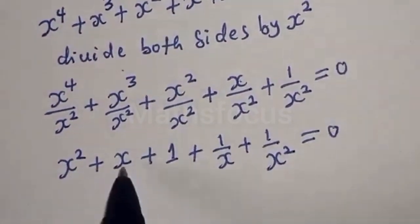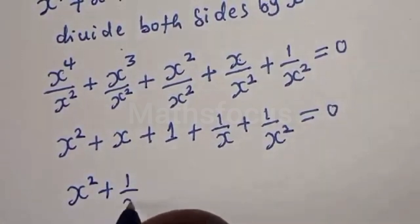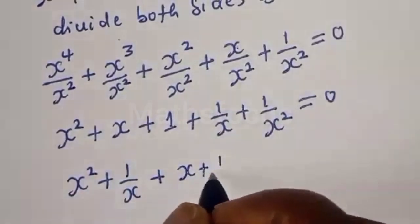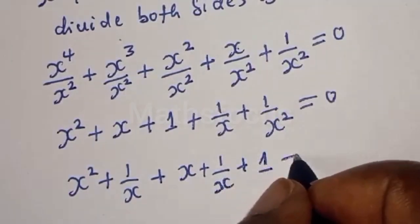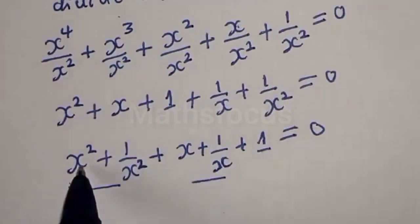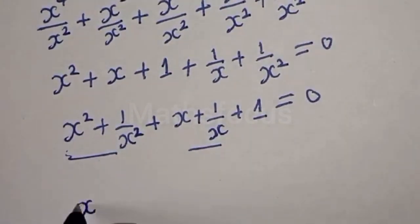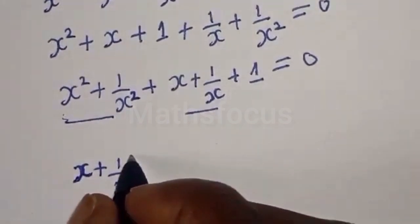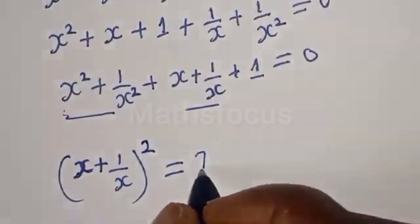Now we have x² and 1/x², and we also have x and 1/x. We can group x² plus 1/x² together and x plus 1/x together. We need to find the value of x² plus 1/x².